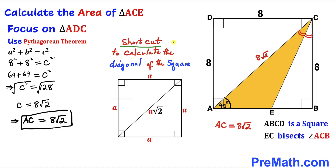Here's a shortcut: to calculate the diagonal of any square, if the side length is A, then its diagonal is A times √2. In our case the side length is 8, so the diagonal is simply 8√2.